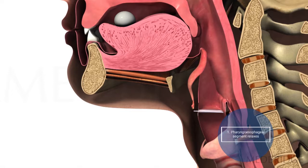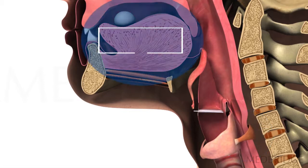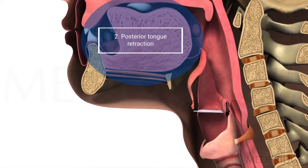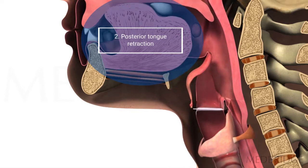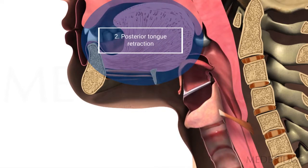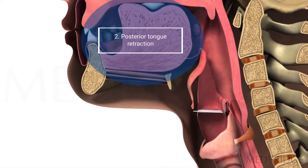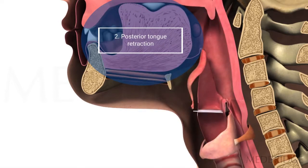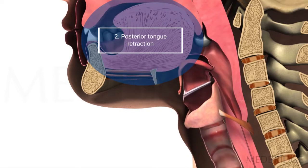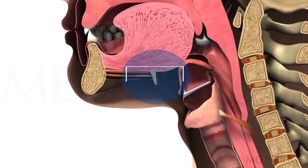How is that accomplished? Going to number two: as the tongue propels the bolus from the oral cavity, by its connections to the hyoid bone, the hyoid bone is elevated.